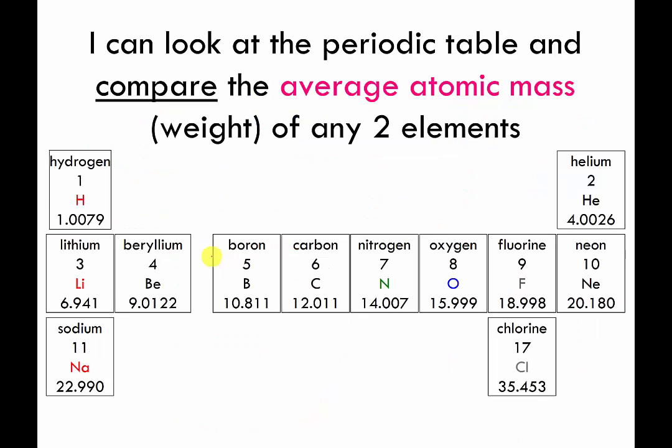This slide is not necessarily a review however you have enough information to do what I want you to be able to do in this slide already. You can look at the periodic table and compare the average weight of two different elements. So I can say well how much heavier is carbon? How many times heavier is carbon than helium? And again just rounding to the nearest whole number. Carbons weigh about 12 AMU. Helium's weigh about 4 AMU.